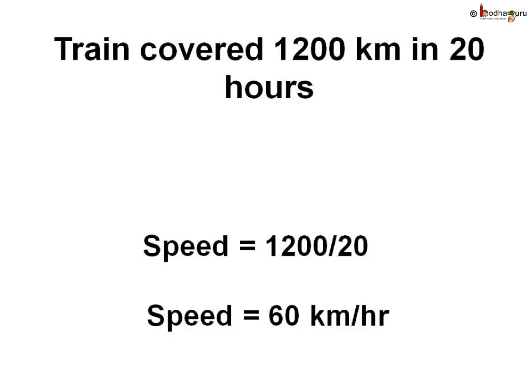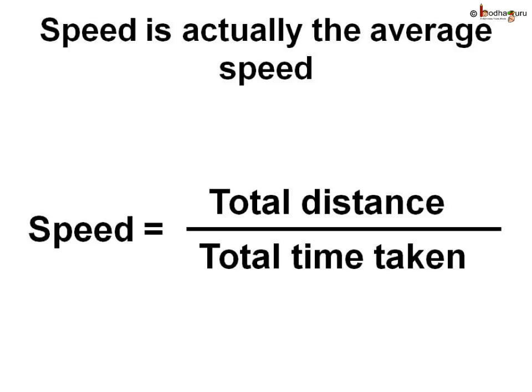If a train covers 1200 kilometers in 20 hours, we can find the speed of the train by dividing the distance covered by the time taken. That is 1200 divided by 20, which equals 60 kilometers per hour. So we calculated the speed of the train as 60 kilometers per hour.